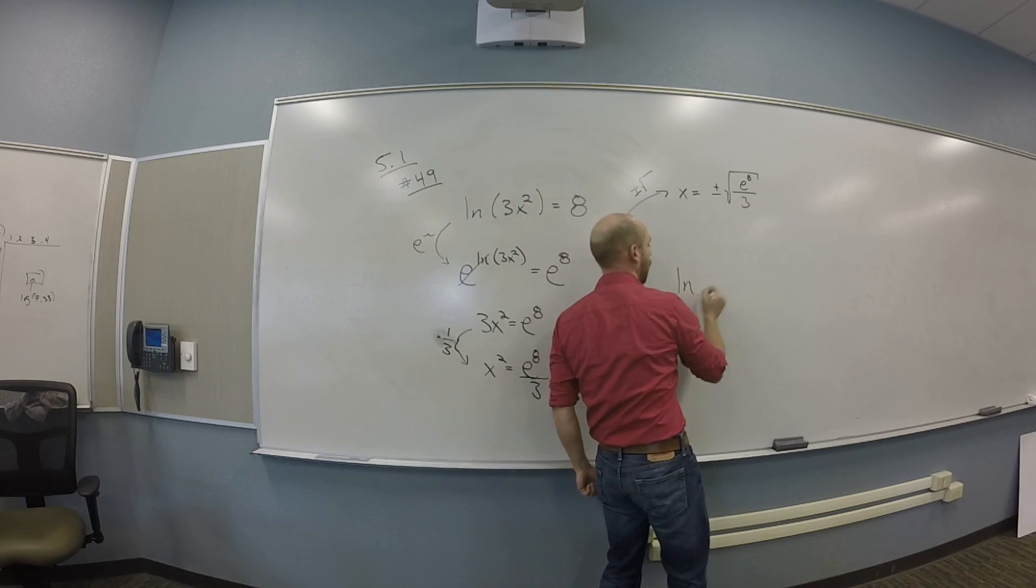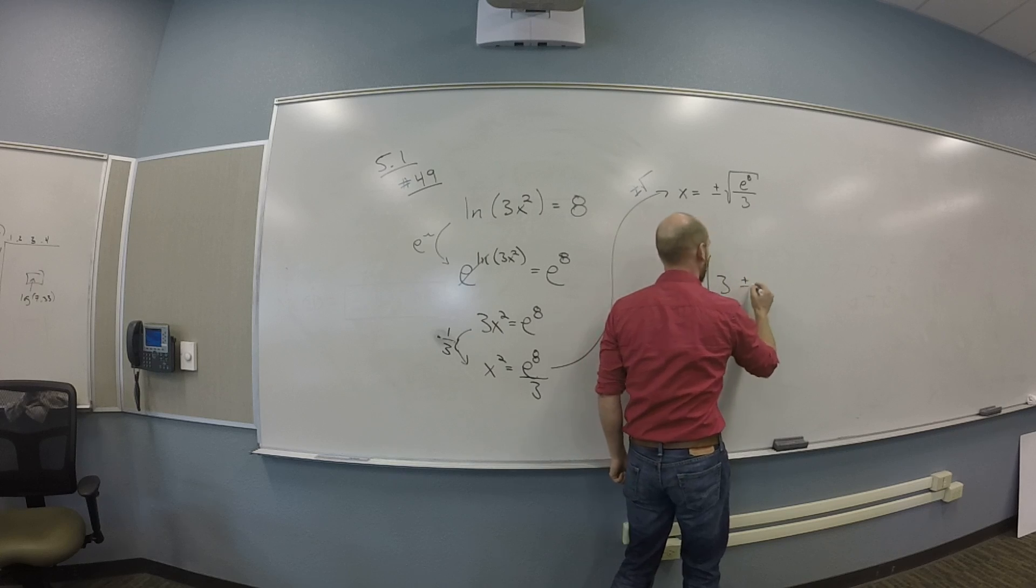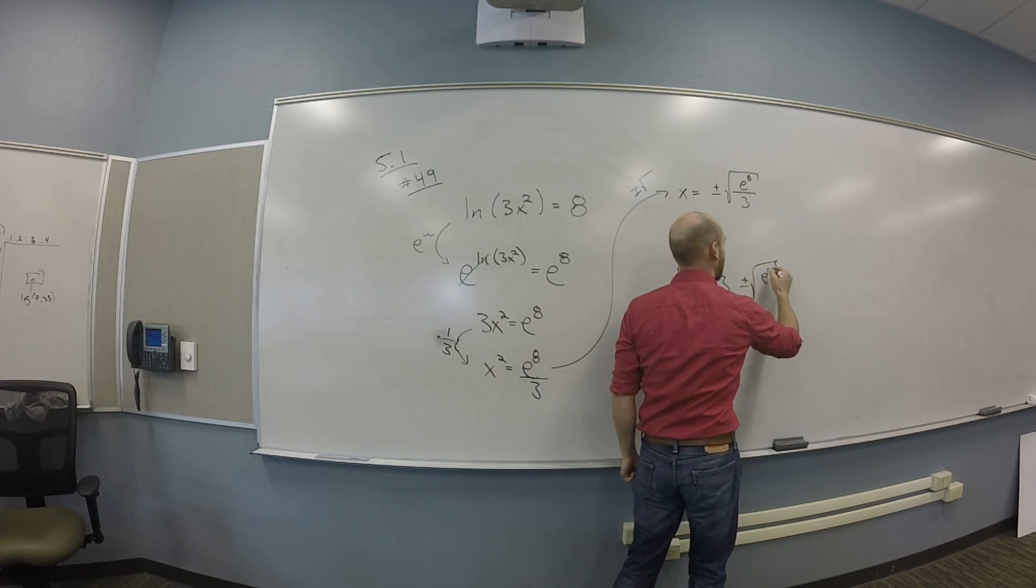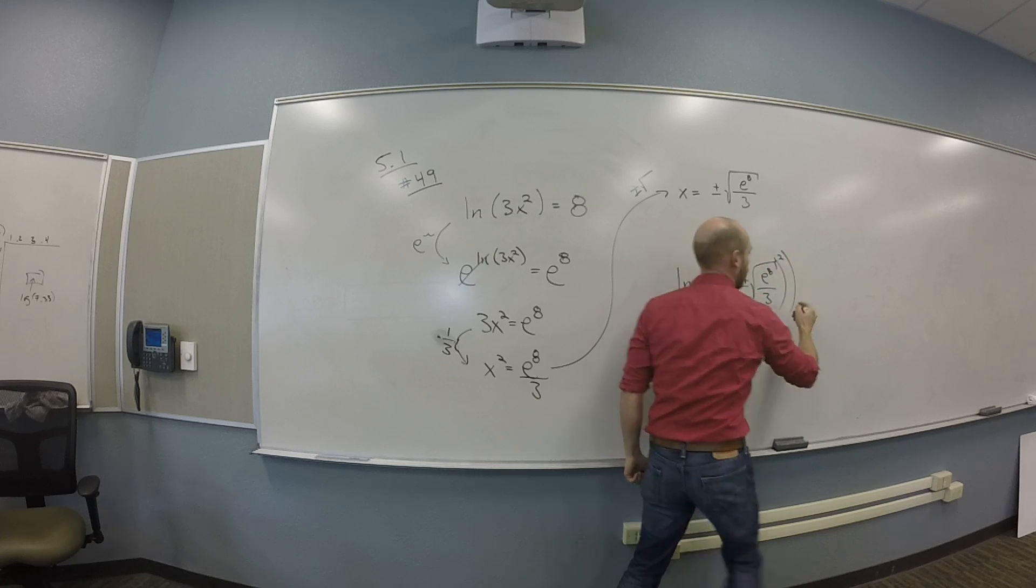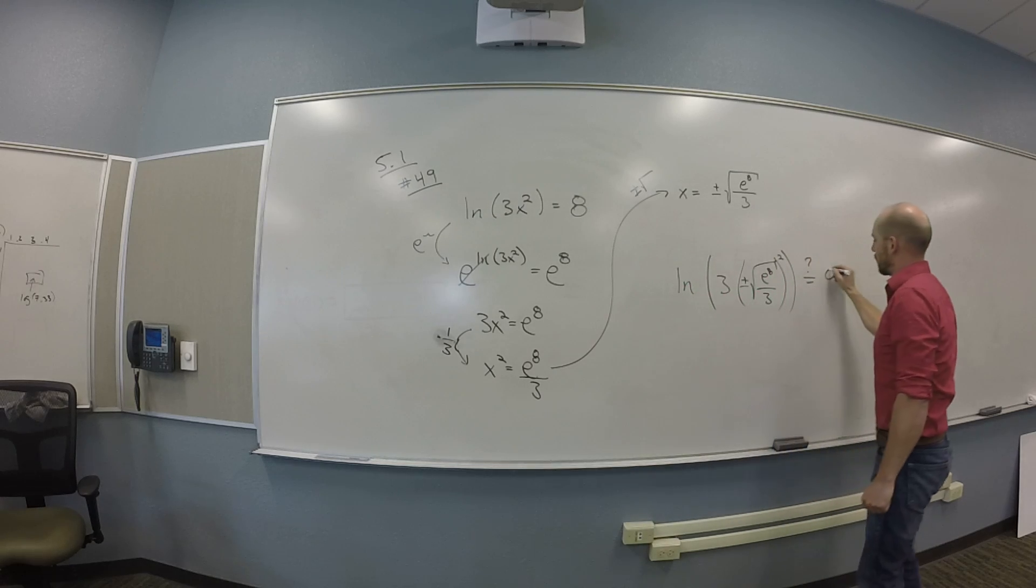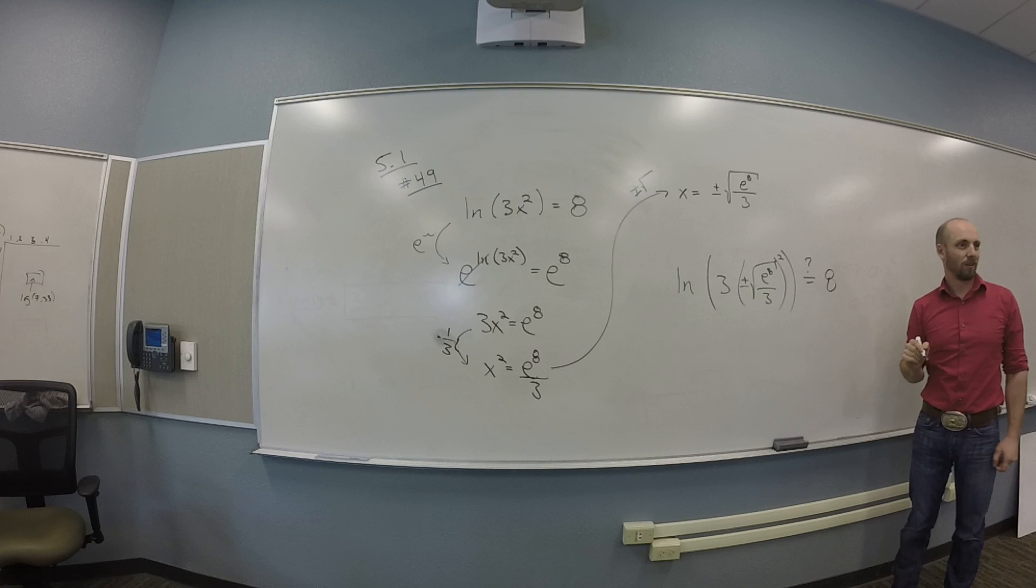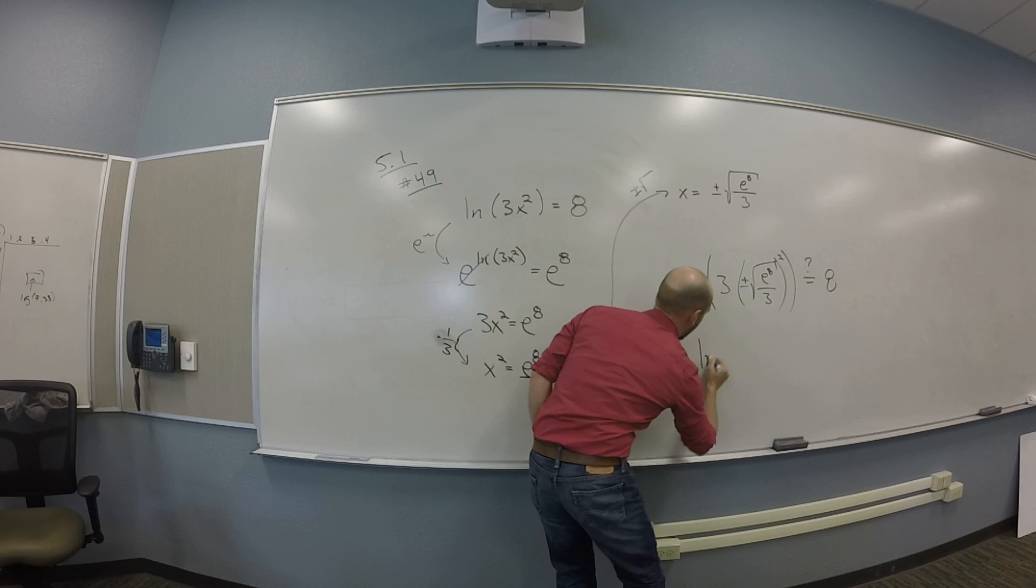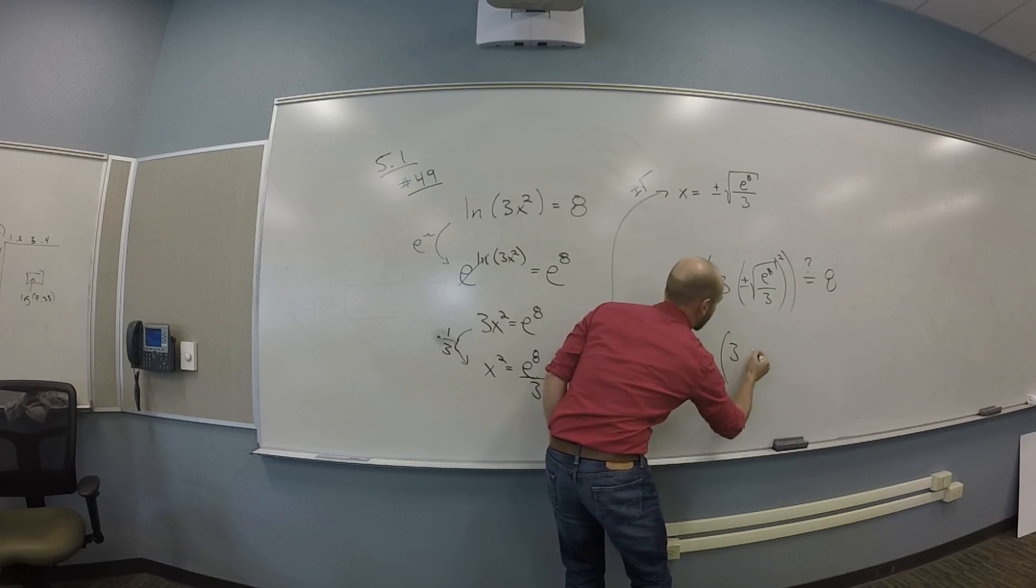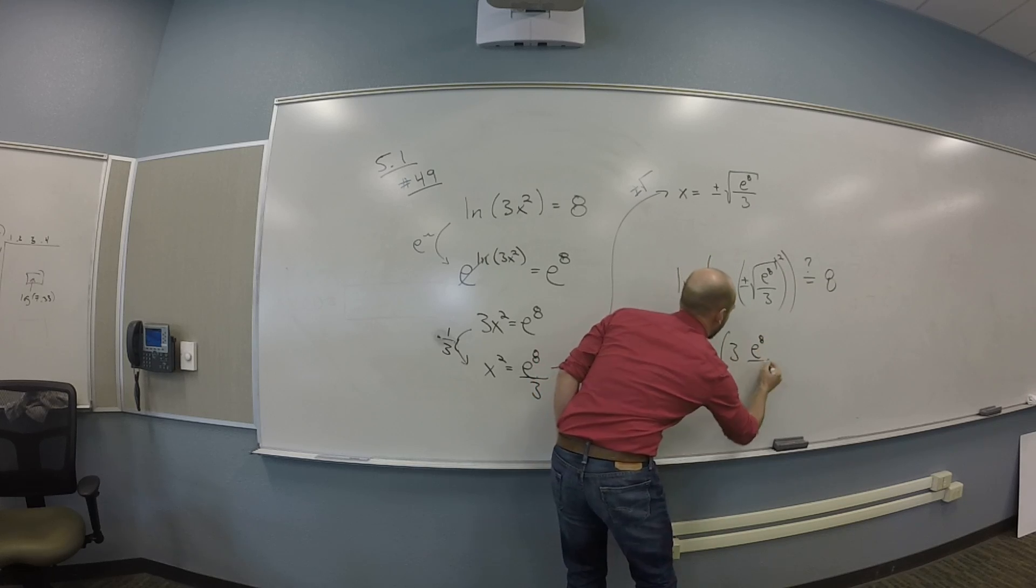So we have log of 3 and then we have plus or minus the square root of e to the 8th over 3 all squared. So this would be log of 3 times e to the 8th over 3.